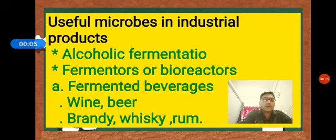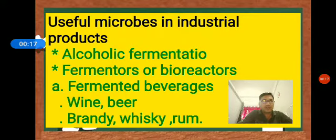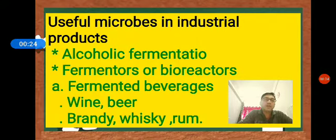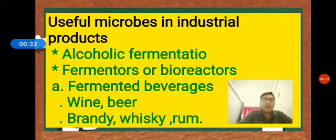Hello students, we are discussing a chapter called Human Health and Diseases. In the previous class we discussed a topic called useful microbes in household products. Now we are going to study one more aspect called useful microbes in industrial products. First, before going to industrial products, we are going to know about alcoholic fermentation.